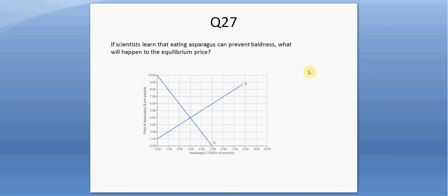Question twenty-seven. If scientists learn that eating asparagus can prevent baldness, what will happen to the equilibrium price? The demand will shift right, pushing the equilibrium price above $4.